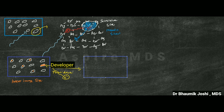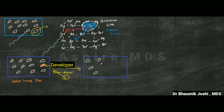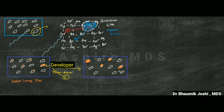Each latent image site is converted to a solid grain of silver. After the film is out from the developer, the grains that were exposed to x-rays can now be seen in the form of solid grains of metallic silver. After this is done, the film is put into the fixer.